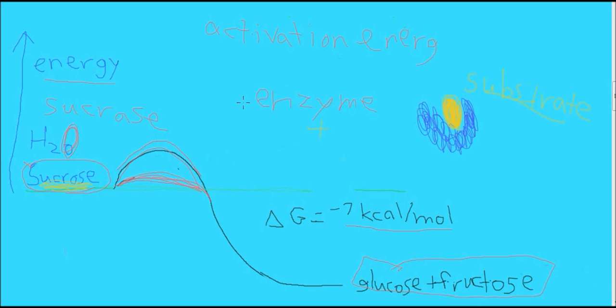Just to review, an enzyme lowers the activation energy or the energy barrier and allows a chemical reaction to take place much more quickly. An enzyme works with a substrate, which is a chemical that's going to react with the enzyme.